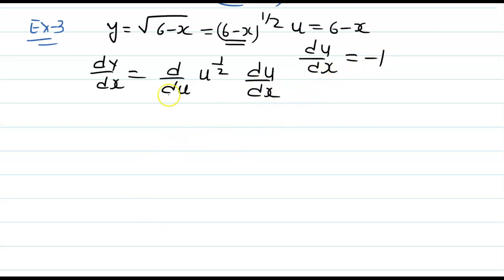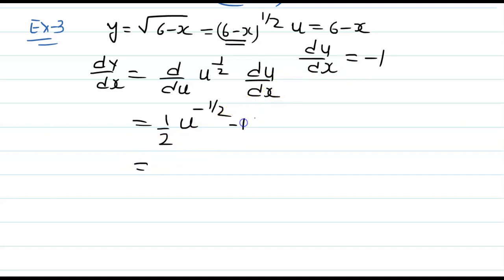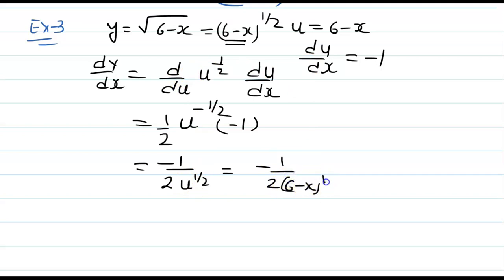So dy over dx is half u to the power minus half times du over dx, which is minus 1. This gives us minus 1 over 2u to the power half. Putting the value of u back where u is 6 minus x, you can write minus 1 over 2(6 minus x) to the power half, or equivalently minus 1 over 2 times the square root of (6 minus x). Both answers are acceptable.